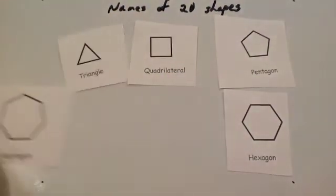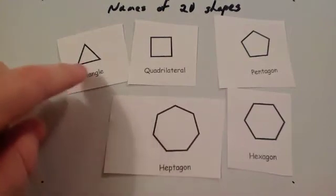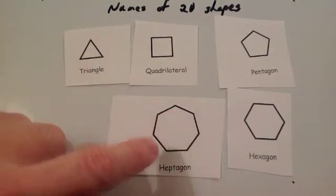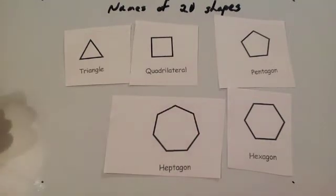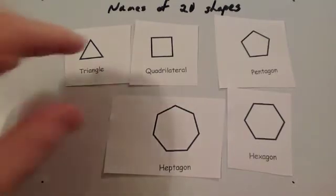A heptagon, 7-sided shape. So a 7-sided shape, it's a heptagon. Think of the heptathlon, Jessica Ennis, 7 events. Heptagon, 7 sides.